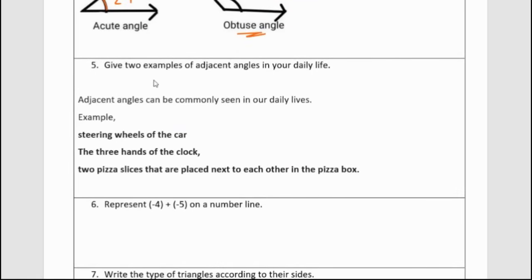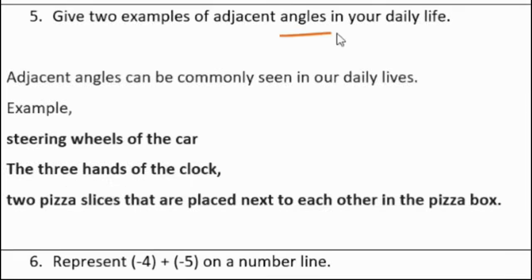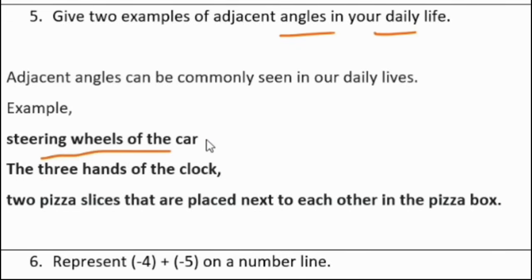Fifth question: Give two examples of adjacent angles in your daily life. We see many things in daily life involving adjacent angles. For example, the steering wheel of a car has adjacent angles. The three hands of a clock will also have adjacent angles.